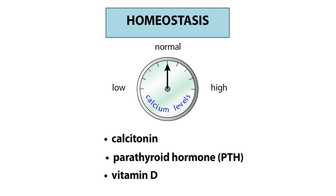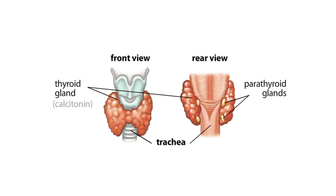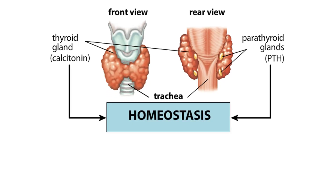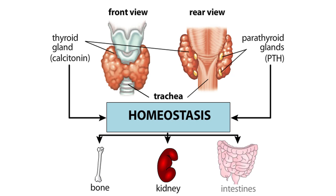The thyroid gland, which sits atop the trachea, produces the hormone calcitonin, while the parathyroid glands, located on the back of the thyroid, produce parathyroid hormone. Calcitonin and PTH maintain calcium homeostasis by controlling the deposition and absorption of bone, the excretion of calcium by the kidneys, and the absorption of calcium by the digestive tract.